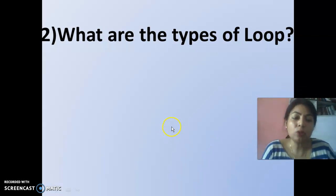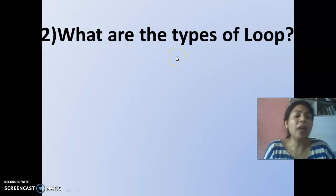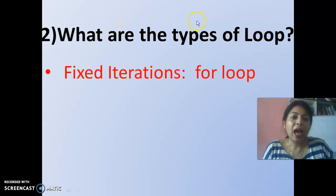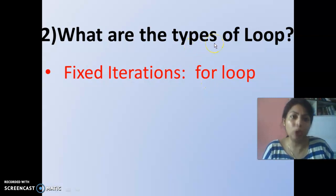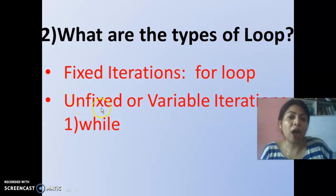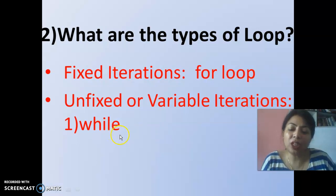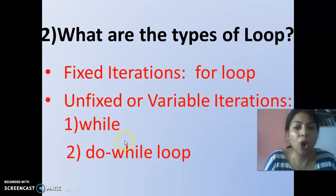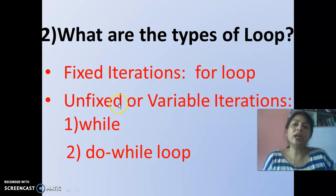Types of loops: Students generally write down the direct answer that three types of loops are there — for loop, while loop, and do-while loop. That is not the correct answer. Actually, the correct answer is two types of loops: fixed iteration — an example of which is for loop — and unfixed or variable iterations — the examples of which are while loop and do-while loop. So don't write down three types; for, while, and do-while are examples, not types of loops.